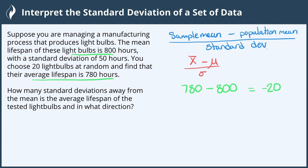Now let's find our 50 hours as the standard deviation. So it's not a full standard deviation below the population mean, but if we divide it by 50, negative 20 divided by 50 gives us negative 0.4.